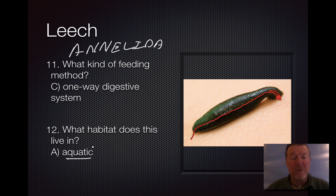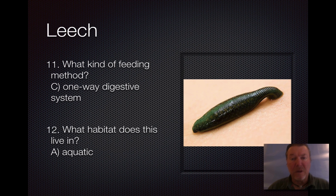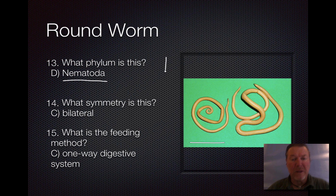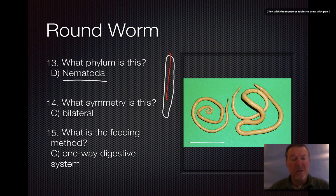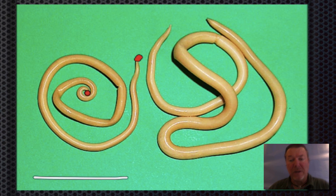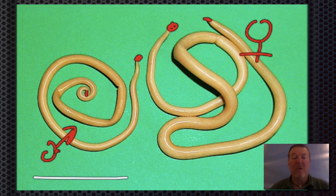The roundworm — Phylum Nematoda — these are parasitic organisms. They have bilateral symmetry, meaning you can divide them only one way and get the same thing on both sides, similar to us. The feeding method is a one-way digestive system: food enters at the mouth and waste exits at the anus. This is the male and this is the female — both have a one-way digestive system.